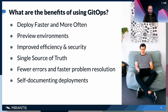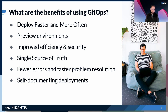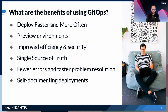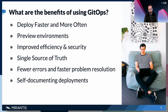The benefits include deploying faster and more often. You get preview environments per feature branch, so you can check whether a feature looks good in your application — each feature branch can have its own deployment or environment. It improves efficiency and security through the single source of truth, leading to fewer errors and faster problem resolution. And you get self-documenting deployments.